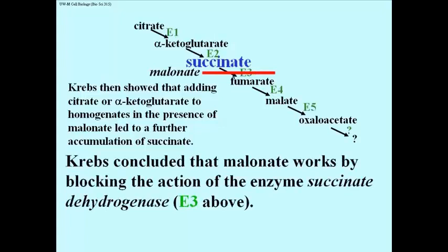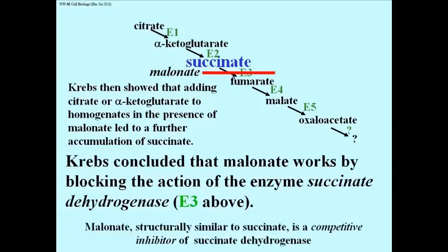From this, Krebs concluded that malonate's mechanism of poison action was to block enzyme number 3, later called succinate dehydrogenase, the enzyme that would oxidize succinic acid. So malonate is a respiratory poison by virtue of blocking succinate dehydrogenase. Malonate is structurally similar to succinate and so is a competitive inhibitor of succinate dehydrogenase.